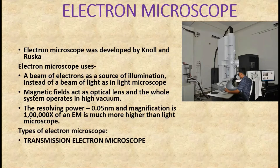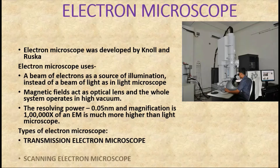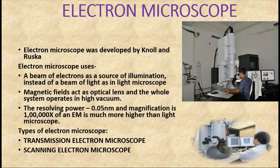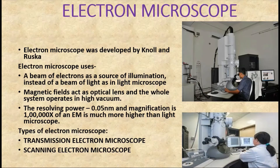The resolving power of the electron microscope is about 0.05 nanometers, and the magnification is many times greater than the light microscope. The two main categories of electron microscope are the transmission electron microscope and the scanning electron microscope.